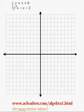Welcome back! Let's solve this system of equations by graphing. The top line has a y-intercept of 6 and a slope of positive 1.